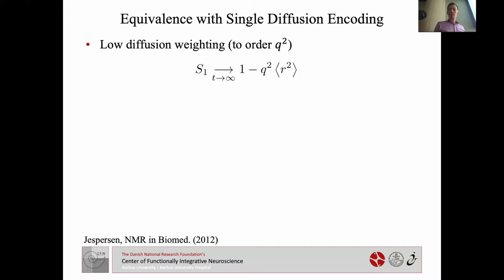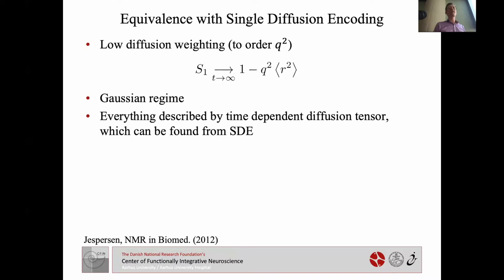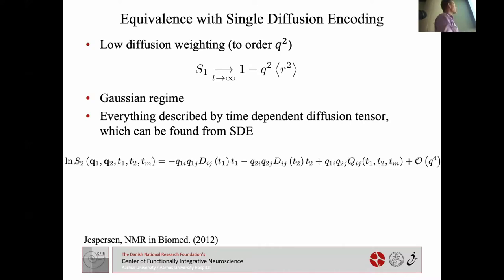But then we asked: is DDE really so different from SDE? For low diffusion weighting in single diffusion encoding, you also get the signal behaving as one minus something times the radius of gyration squared — completely the same. Once you're in the Gaussian regime — where everything can be described by a time-dependent diffusion tensor — you can get that information from SDE alone, possibly with several SDE experiments.